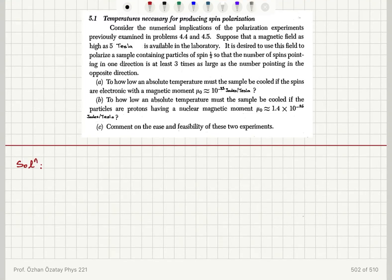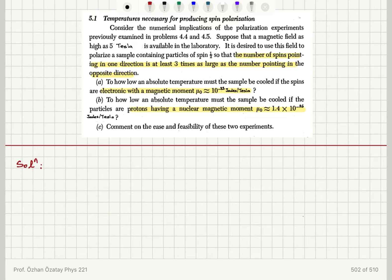Temperatures necessary for producing spin polarization. Consider the numerical implications of the polarization experiments previously examined in problems 4.4 and 4.5. Suppose that a magnetic field as high as 5 Tesla is available in the laboratory. It is desired to use this field to polarize a sample containing particles of spin 1.5 so that the number of spins pointing in one direction is at least 3 times as large as the number pointing in the opposite direction. To how low an absolute temperature must the sample be cooled if the spins are electronic with a magnetic moment 10 to minus 23 Joules per Tesla? To how low an absolute temperature must the sample be cooled if the particles are protons having a nuclear magnetic moment 1.4 times 10 to minus 26 Joules per Tesla? Comment on the ease and feasibility of these two experiments.